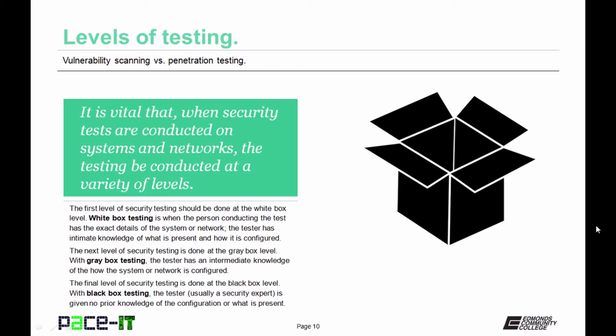The next level of security testing is done at the gray box level. With gray box testing, the tester has an intermediate knowledge of how the system or network is configured. A gray box tester is often somebody who is associated with the developer — they may belong to the same group or they may be developing similar types of products.